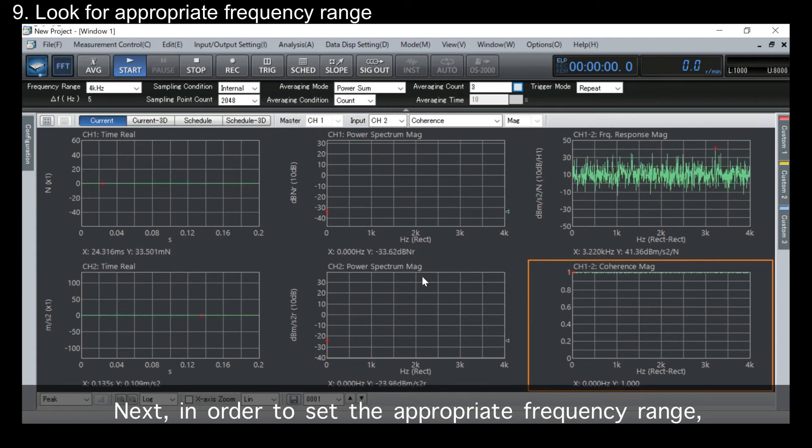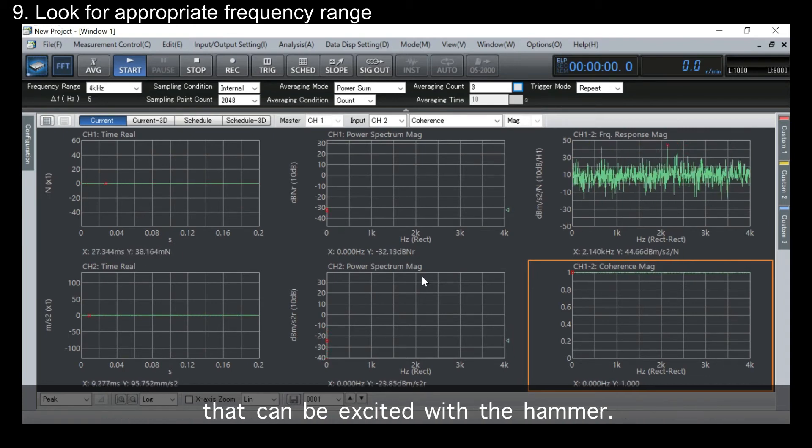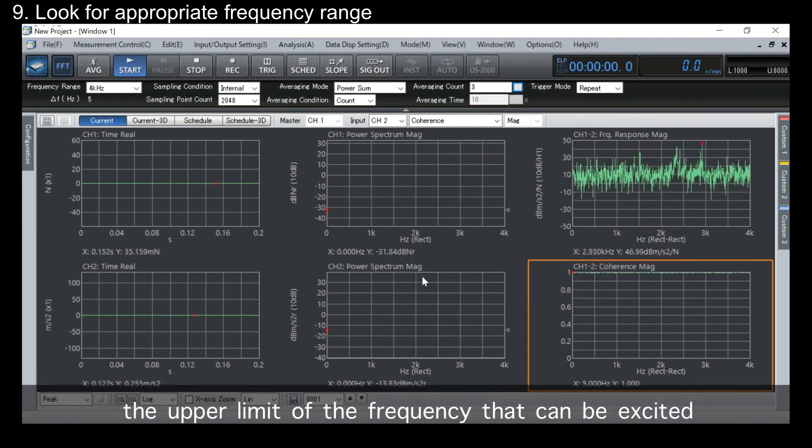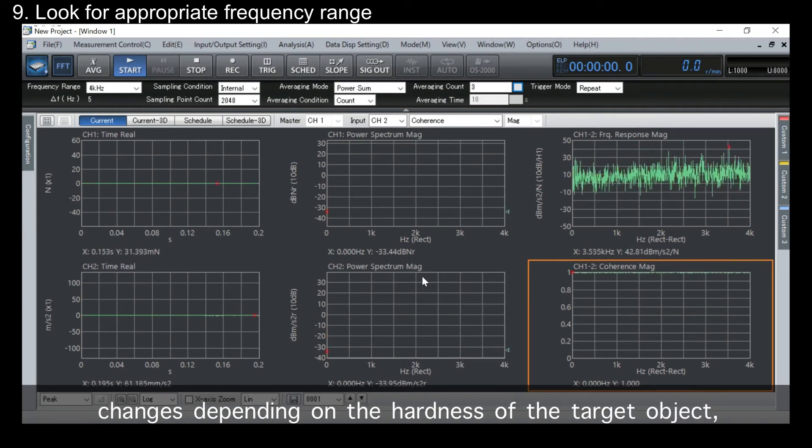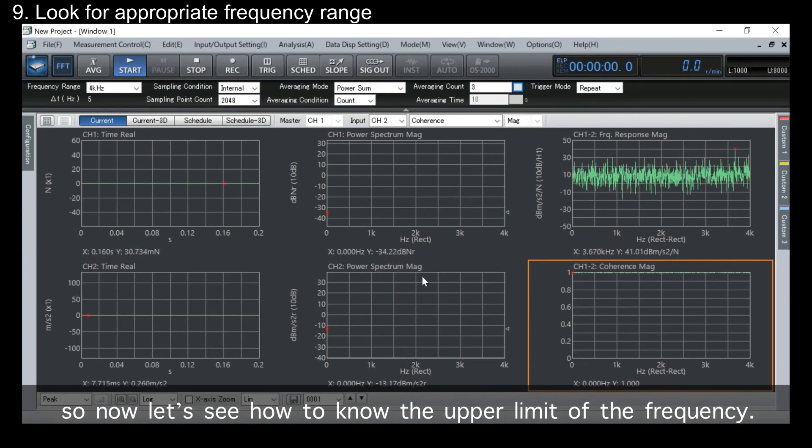Next, in order to set the appropriate frequency range, we have to know the upper limit of the frequency band that can be excited with the hammer. The upper limit of the frequency that can be excited changes depending on the hardness of the target object, the type of hammer, and the material of the impact tip. So, now, let's see how to know the upper limit of the frequency.